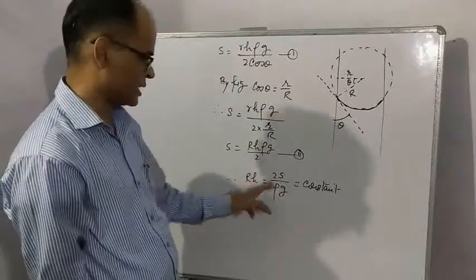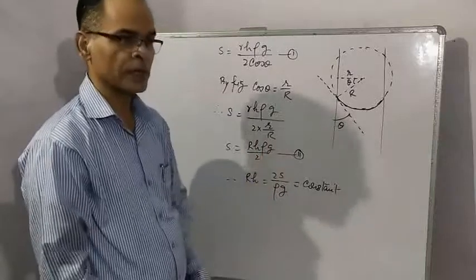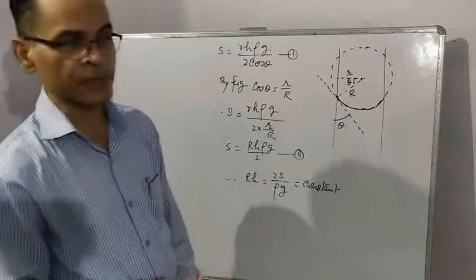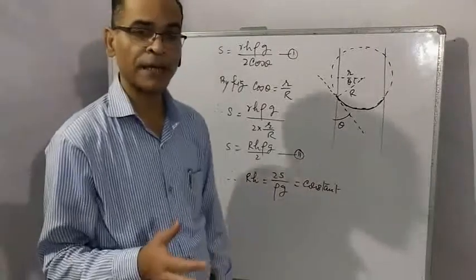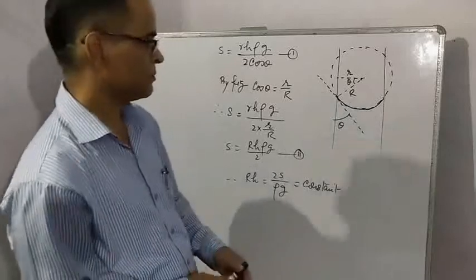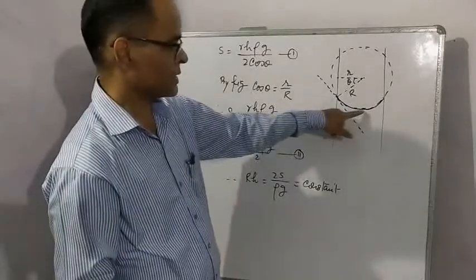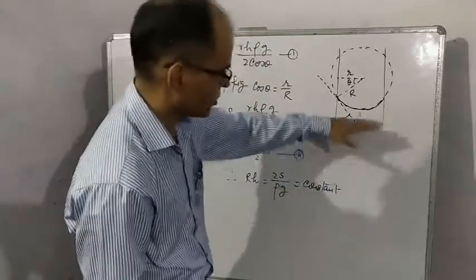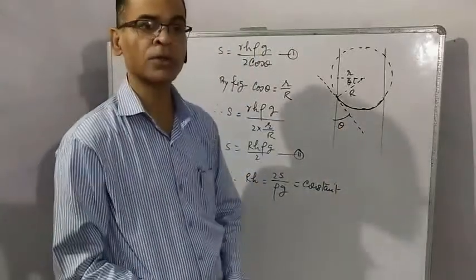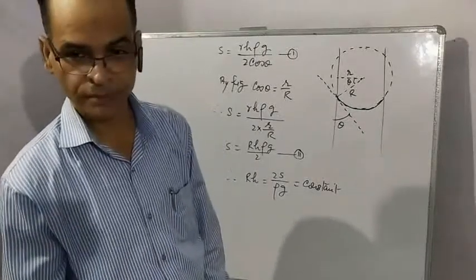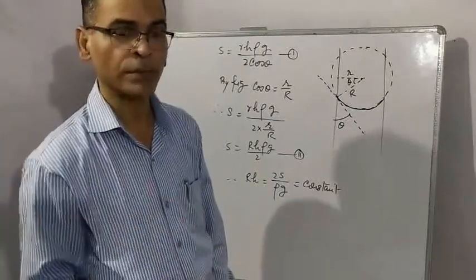Now one interesting question is asked: what happens if a capillary tube of insufficient length is taken? If liquid is rising to this height and you are taking only this length, then what should happen? Whether liquid will come out continuously or not?